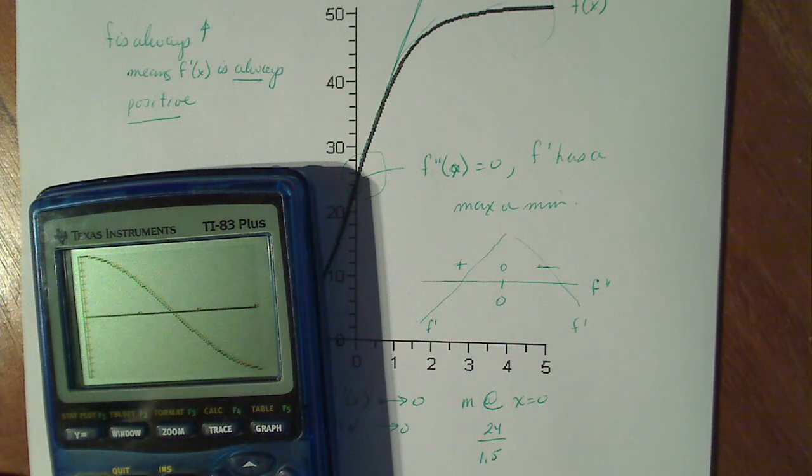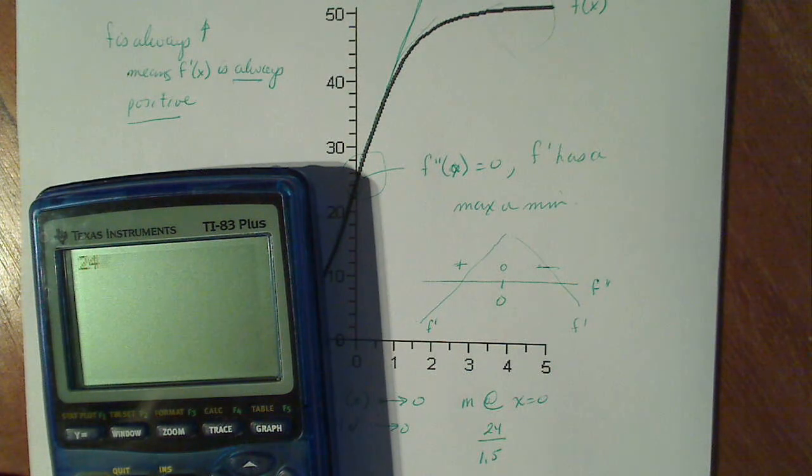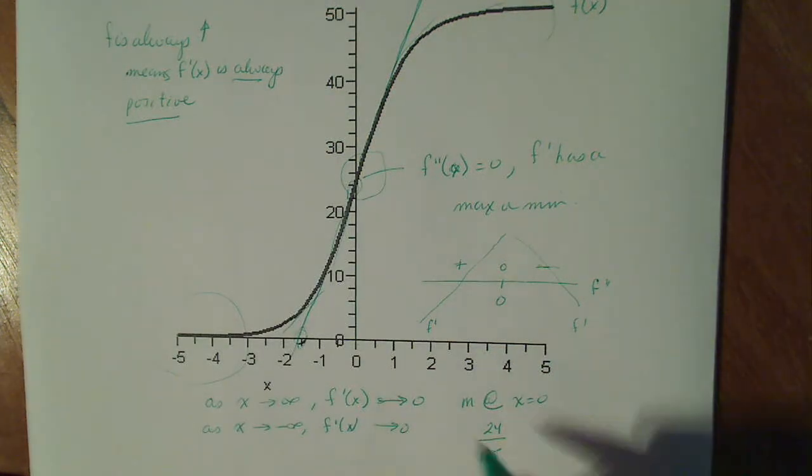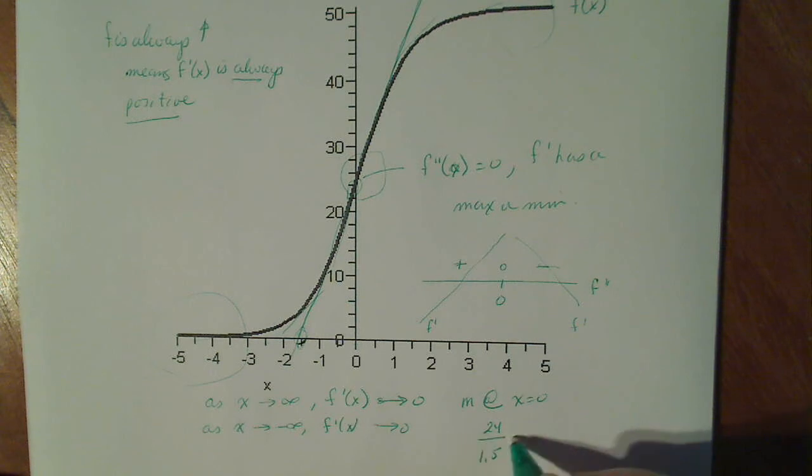And again, this is all eyeballing. You know, there's no guarantee here about anything. I mean, we're just getting the approximation. So it looks like at x equals zero, my output for f prime there should be about 16.